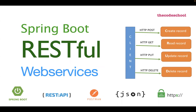REST focuses on common or uniform resources. We categorize the domain objects based on business needs, break them into resources, and create common URIs for them. Since it is based on HTTP — Hypertext Transfer Protocol — it supports various methods like PUT, POST, GET, DELETE, OPTIONS, HEAD, and several other methods, around seven or eight different methods.